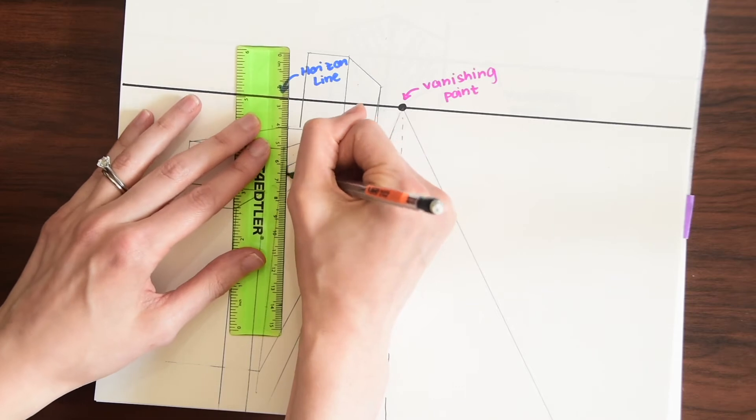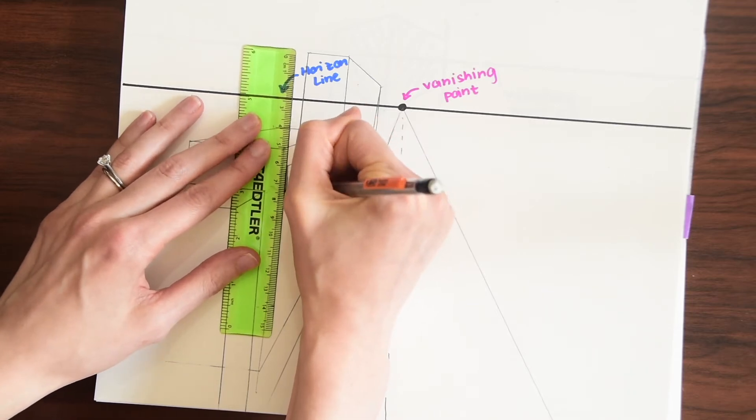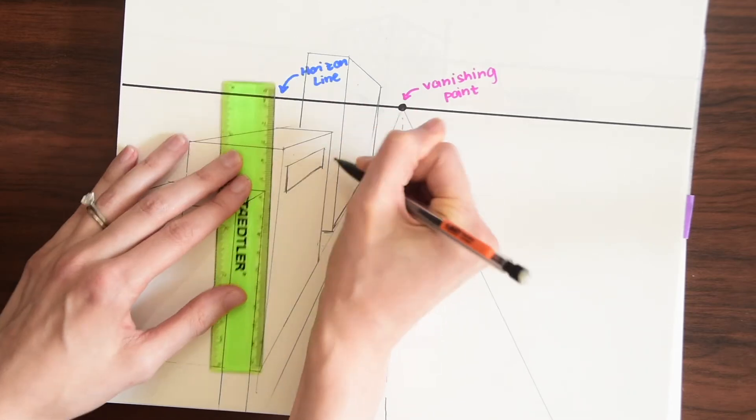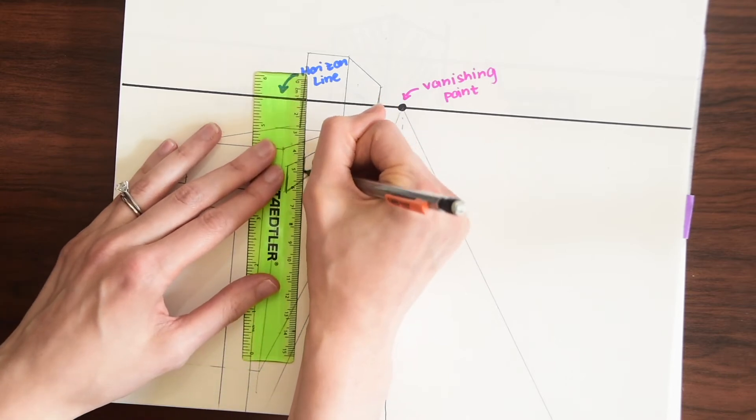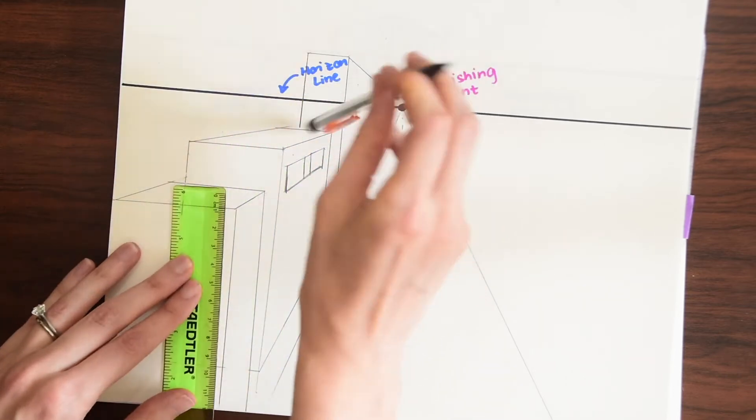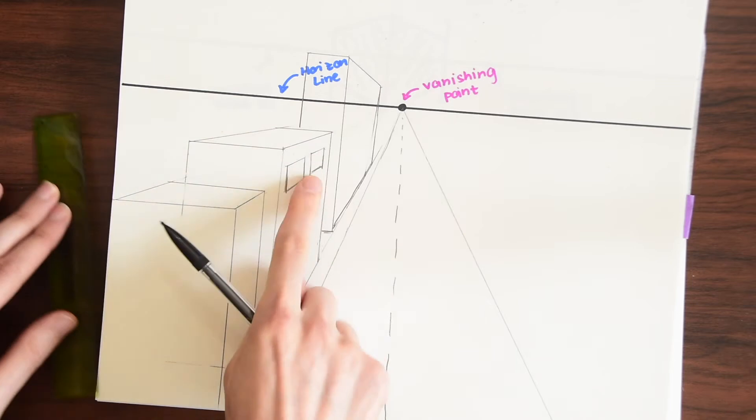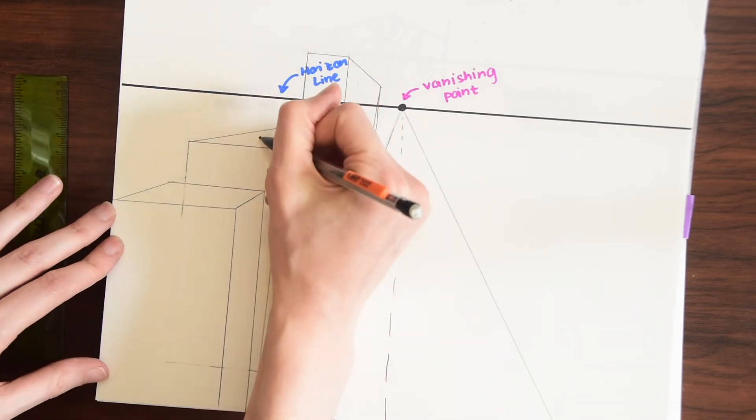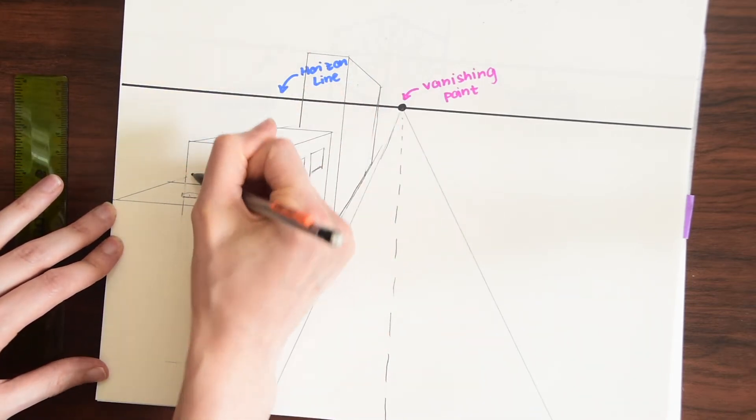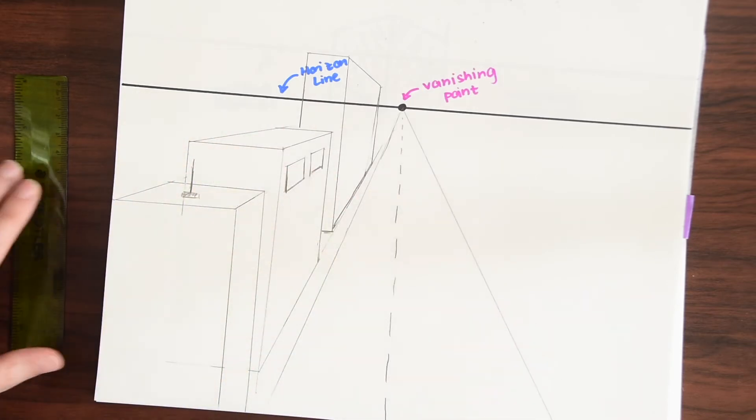And then we always have parallel lines going down. They all face the same vertical direction. So just drawing some quick windows and you can do this all the way down in your buildings and you could add little antennas and just all the different things you might see in a cityscape and really have fun with your imagination here.